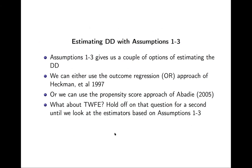Estimating DD with assumptions one through three gives us a couple of options. We can use outcome regression - that's the Heckman et al. paper - or we can use the propensity score approach of Abadie, which is the IPW. We could also use a third approach: two-way fixed effects and just control for covariates. But what I'm going to show you is that if you use two-way fixed effects, those three assumptions are not enough - you actually need three more.